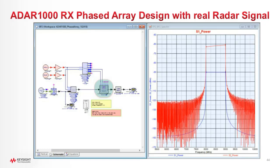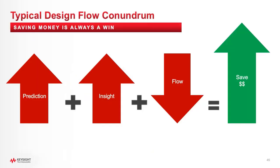I hope you had some fun taking a look at the virtual equation applied to four different examples through prediction and insight. As we increase those and decrease the amount of tools, data exchanges, and translations between different tools or measurements, we lower that flow footprint. We're going to save money on design — whether it's engineering hours in the lab or the anechoic chamber, or reducing costly re-spins.